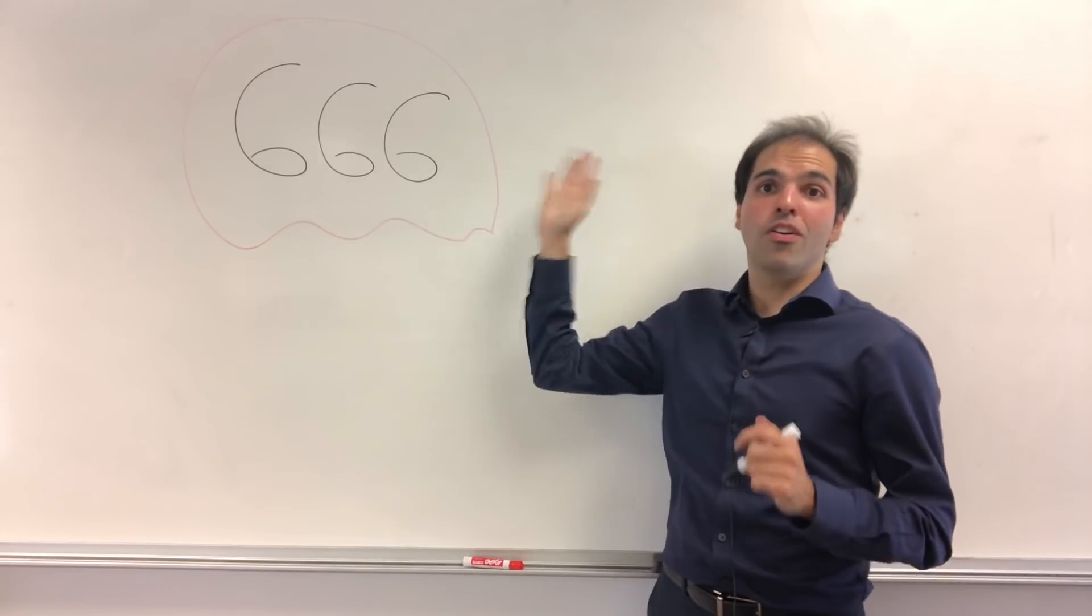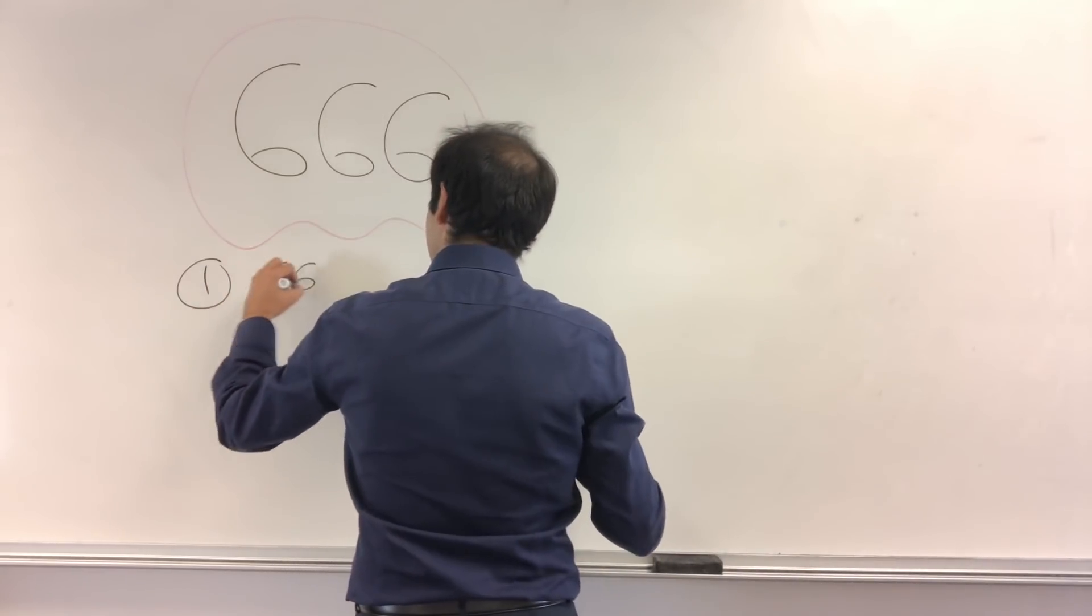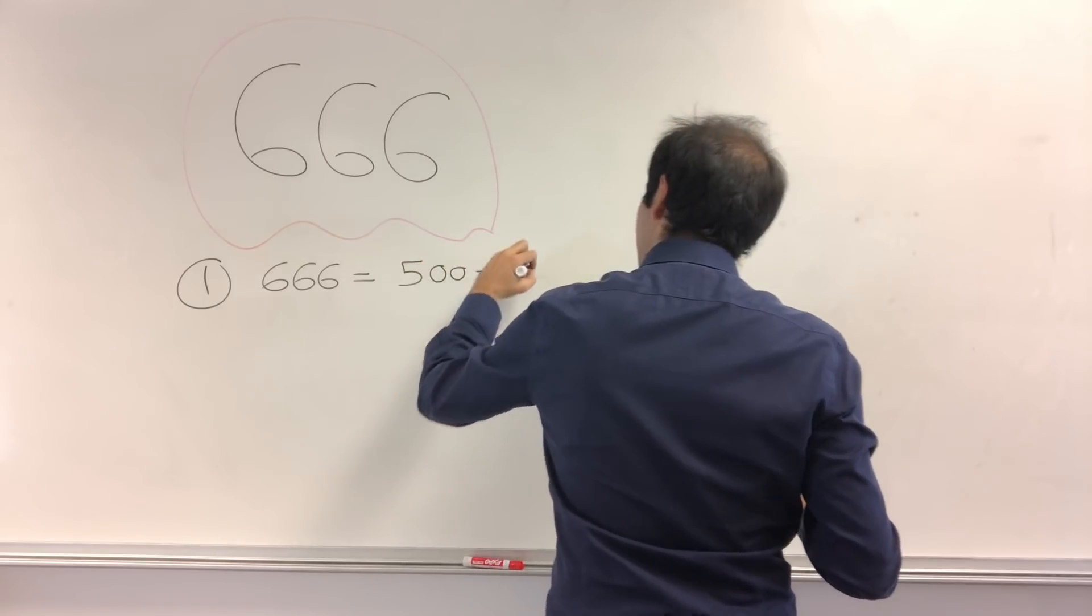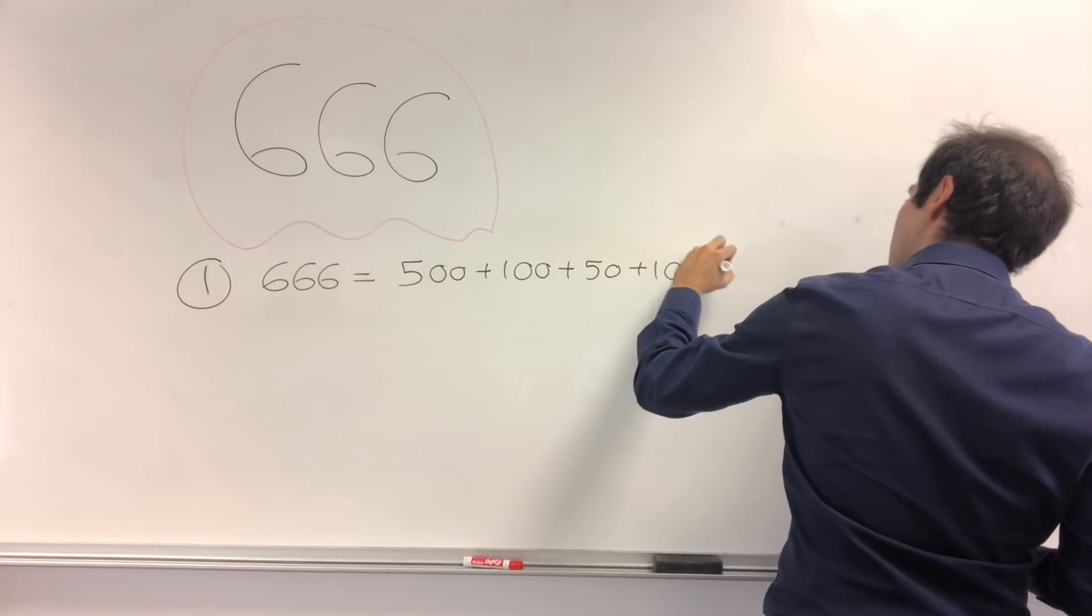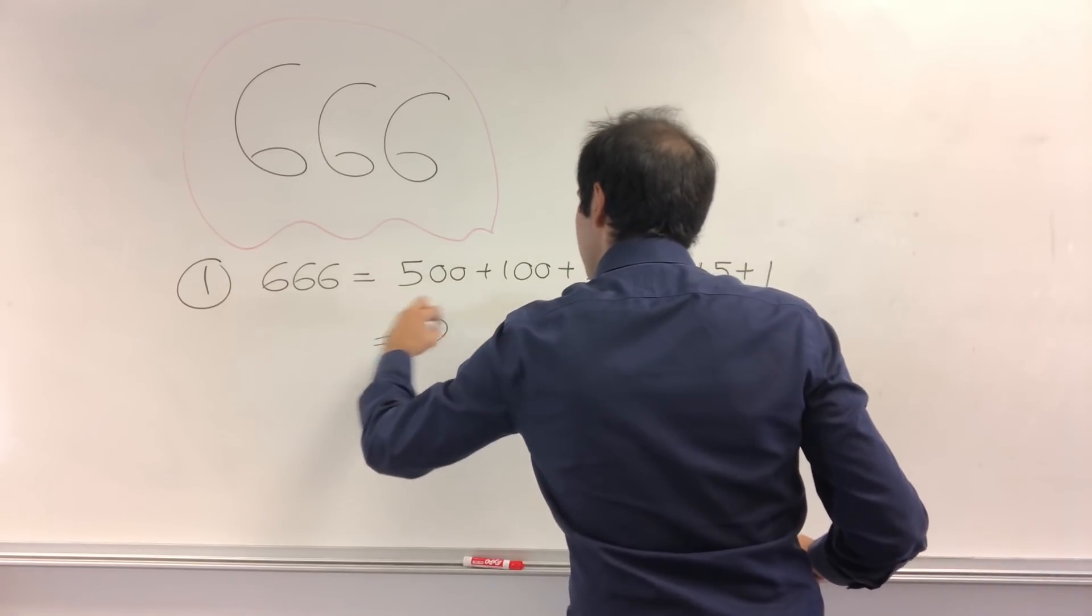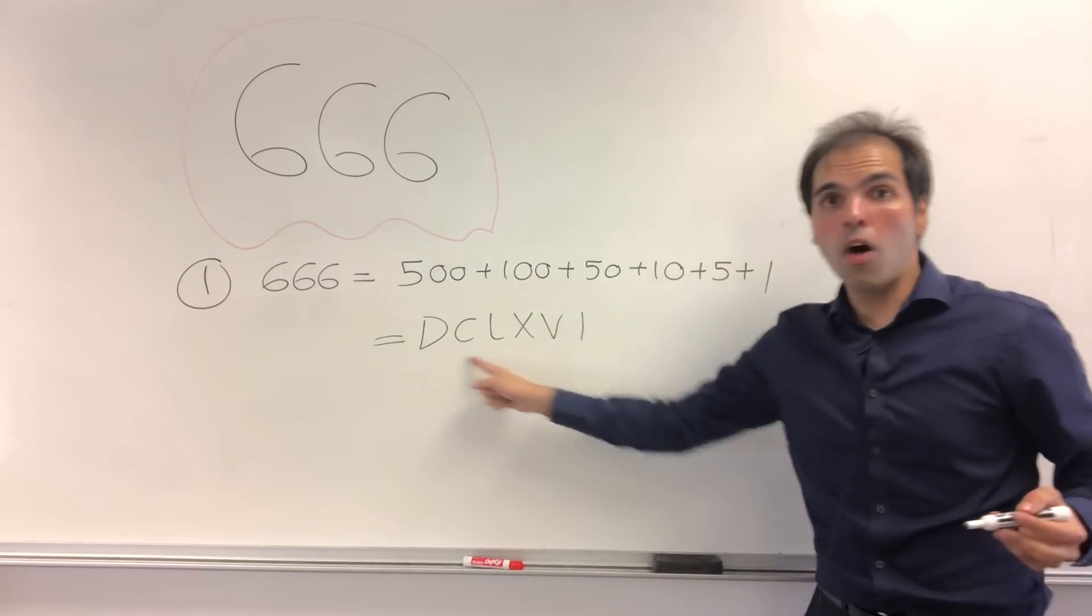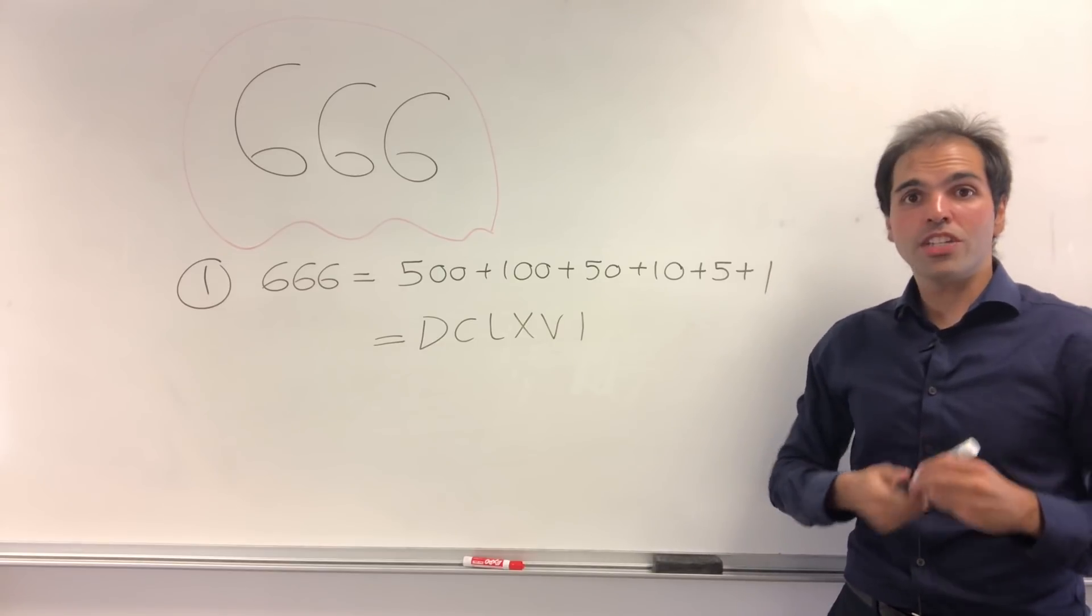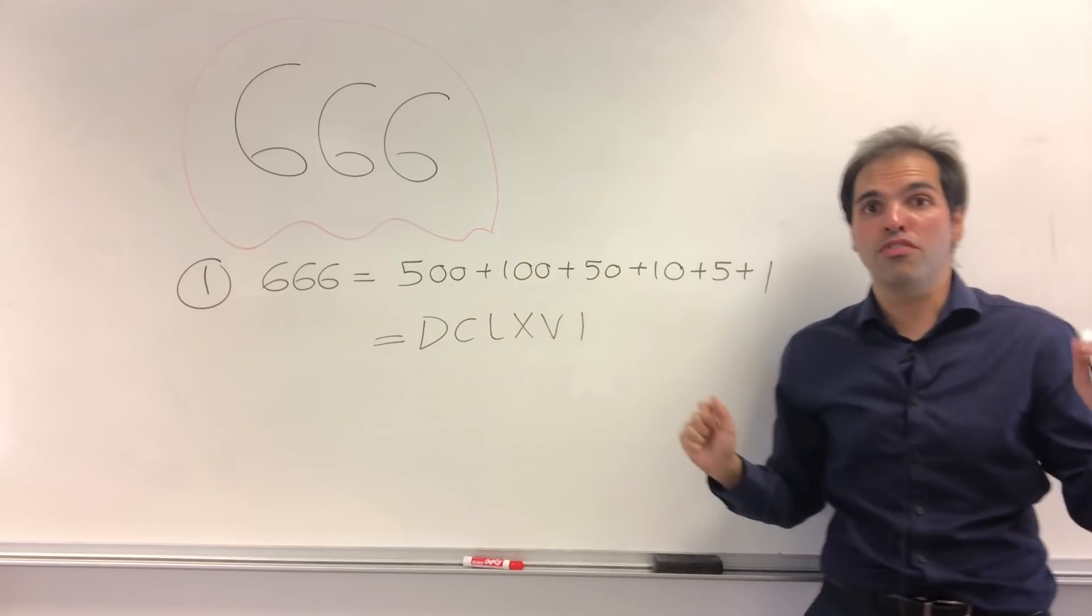Because first of all, if you write 666 in Roman numerals, what this becomes is 500 plus 100 plus 50 plus 10 plus 5 plus 1, which then becomes DCLXVI. So almost all the Roman numerals bought in order, which is probably why it's so frowned upon. Because it's so beautiful, it's scary.